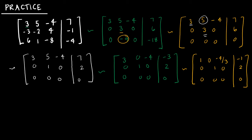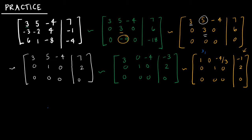So this is where we are now, and it looks very familiar. The only difference is that the last column entries are not all zeros — before they were all zeros. My solution set gives: x1 minus 4 thirds x3 equals negative 1; x2 equals 2; and x3 is free.